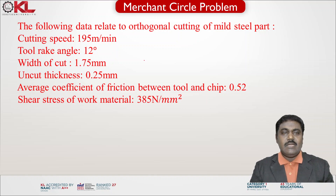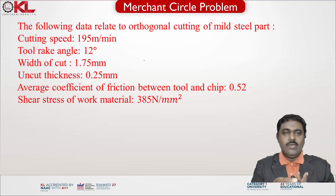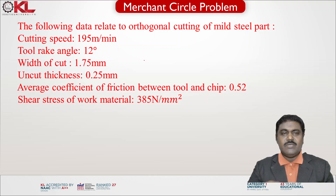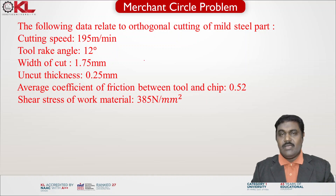The following data is related to the orthogonal cutting of a mild steel part: cutting speed 195 meters per minute, tool rake angle 12 degrees, width of cut 1.75 mm, uncut thickness 0.25 mm, average coefficient of friction between tool and chip 0.52, and shear stress of the work material 385 Newton per mm square.